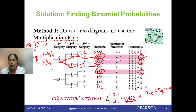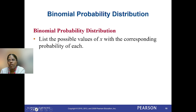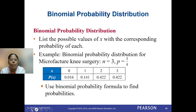The answer is 0.422. This is one method. Another method is the binomial probability formula: substitute n=3, p=3/4, q=1/4, X=2, and you get the same answer. The binomial probability distribution lists all possible values of X with their corresponding probabilities. For this surgery example with n=3, X takes values 0, 1, 2, 3. Use the binomial probability formula to find each probability.